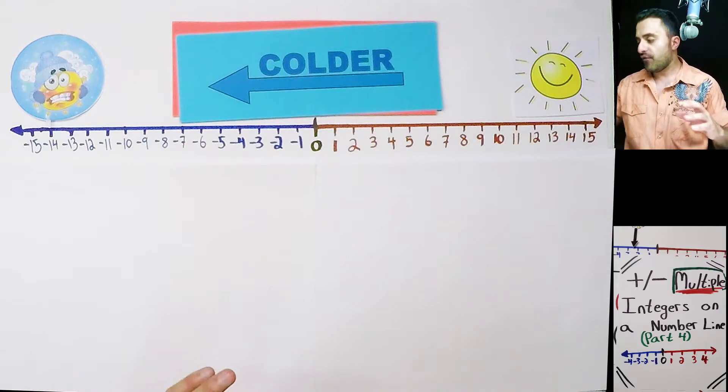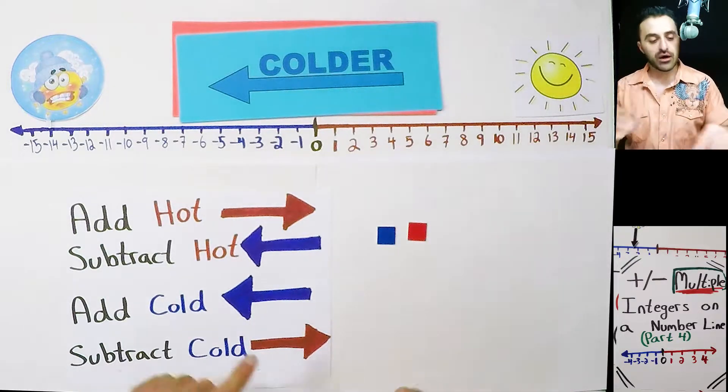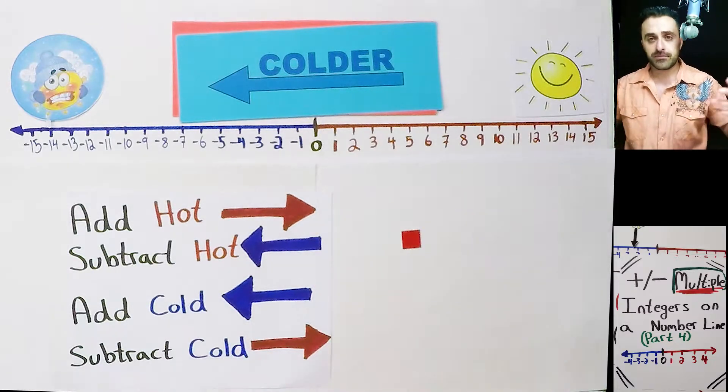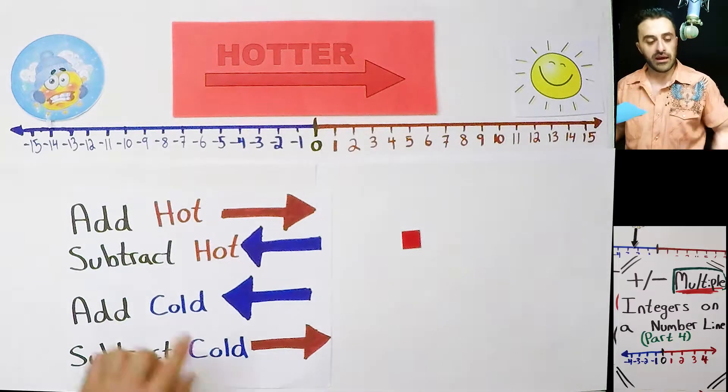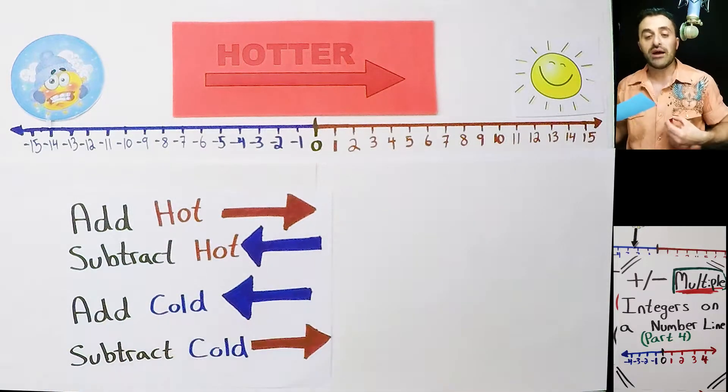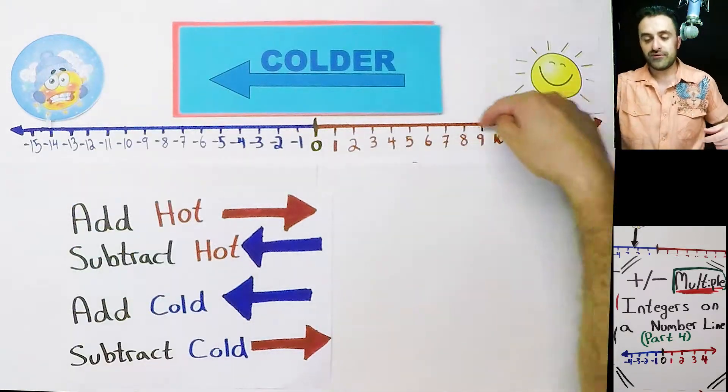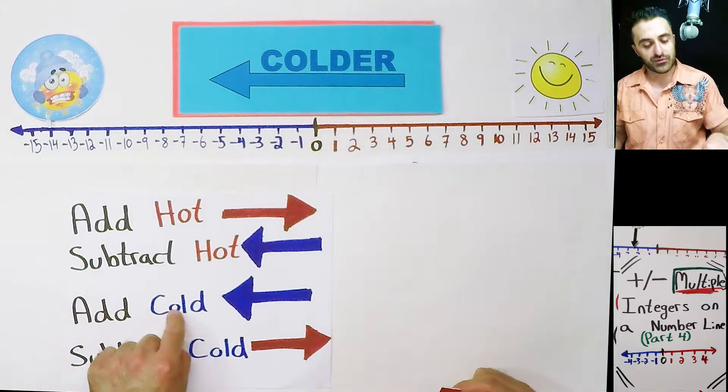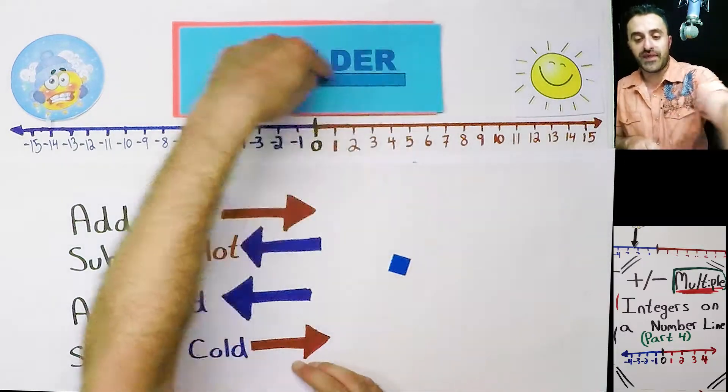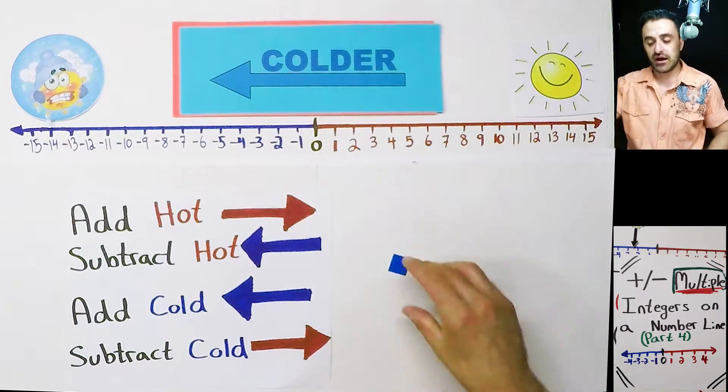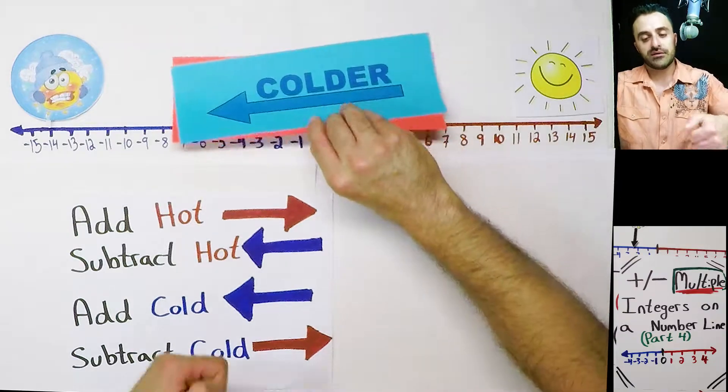We looked at four possibilities. We can either add hot cubes and if we add hot cubes to some soup that soup will start to heat up and heating up means we're gonna move right on the number line. If we subtract the hot cubes, if they're floating around in the soup and we take them out, that soup can no longer heat up, it starts cooling down. So now it's gonna start cooling down, cooling down means we have to move this way on the number line.